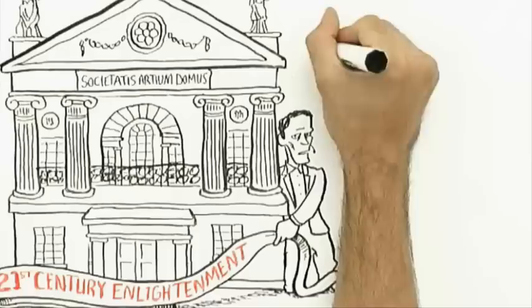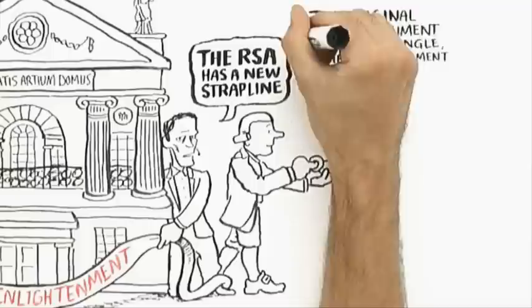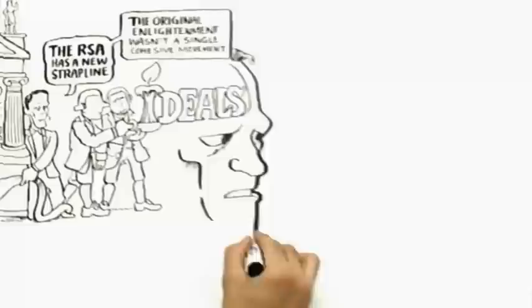The RSA has a new strapline, and that strapline is 21st century enlightenment. The original enlightenment in the 18th century was not, of course, a single cohesive movement. It didn't have a simple start and finish.